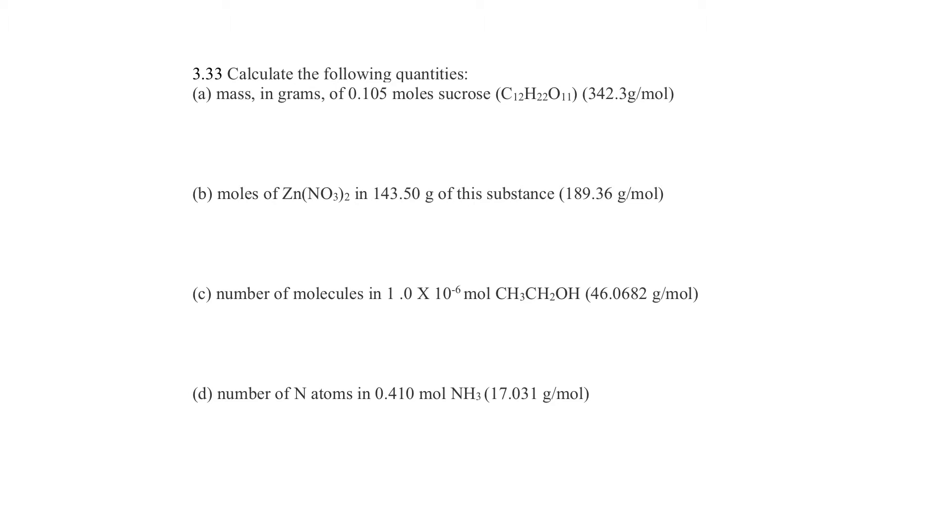Now, I went ahead and told you what the molar mass of each of these formulas are. If you're not given it, then you have to take, for instance, in sucrose, there's 12 carbons. You would get the periodic table. You would find that carbon is 12.01, so you'd say 12 times 12.01. Hydrogen is 1.00794 times 22. Oxygen is 15.9994 times 11. Then add them up, and you'll get 342.3 grams for every mole.